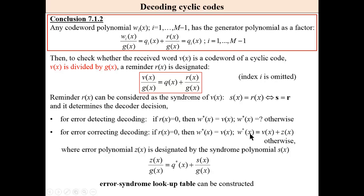For error-correcting decoding: if the remainder is zero, there is no error. If the remainder is non-zero, we find the error pattern polynomial, which is determined from the corresponding equation. The error pattern divided by the generator polynomial gives the error syndrome, and then an error syndrome lookup table can be constructed.